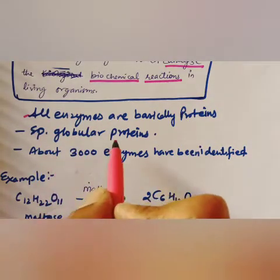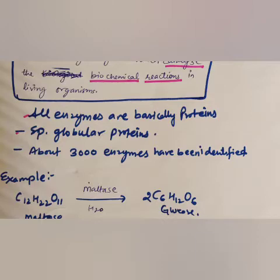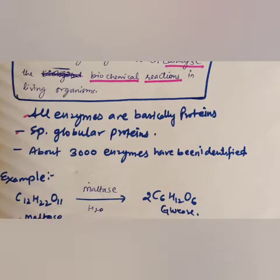Chemically, enzymes are naturally occurring simple or conjugated proteins — especially globular proteins. At present, more than three thousand enzymes have been identified. Almost all enzymes are globular proteins, and they are very specific for a particular reaction and a particular substrate.